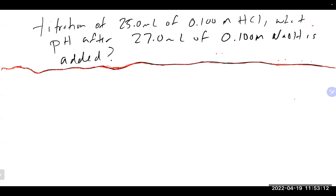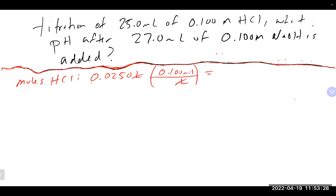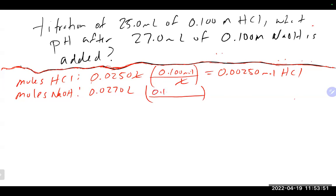To find moles of HCl: convert 25 mL to 0.025 L and multiply by 0.1 mol/L, giving 0.0025 moles of HCl. For sodium hydroxide: 0.027 L times 0.1 mol/L gives 0.00270 moles of NaOH.